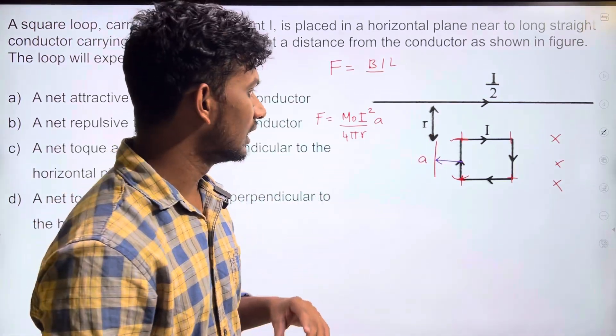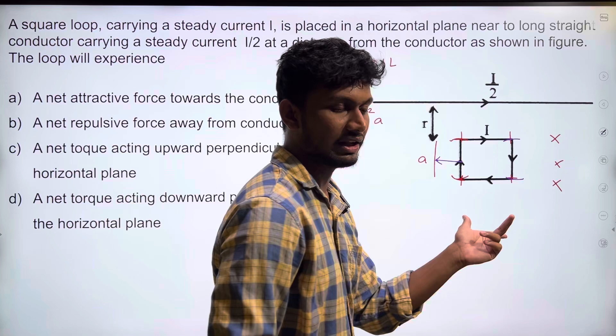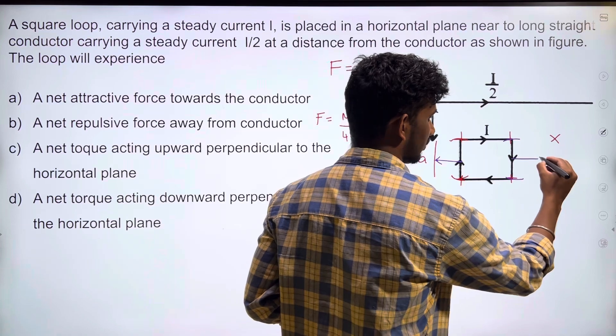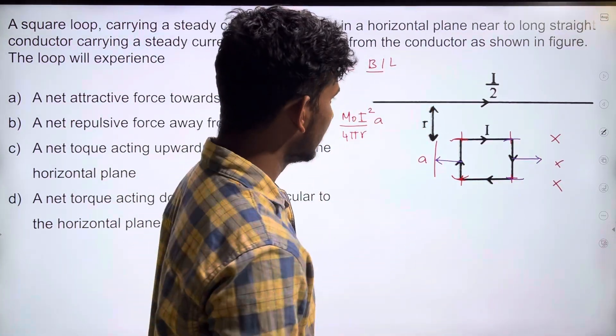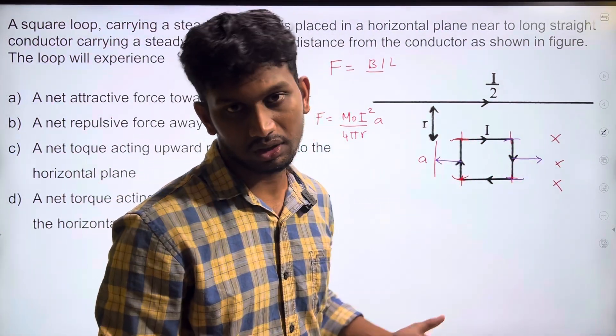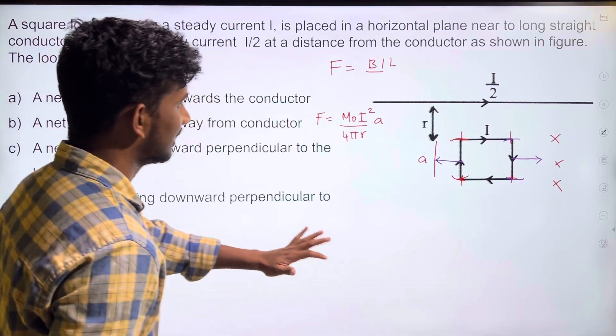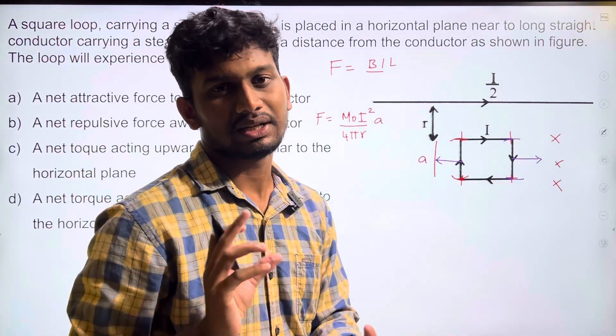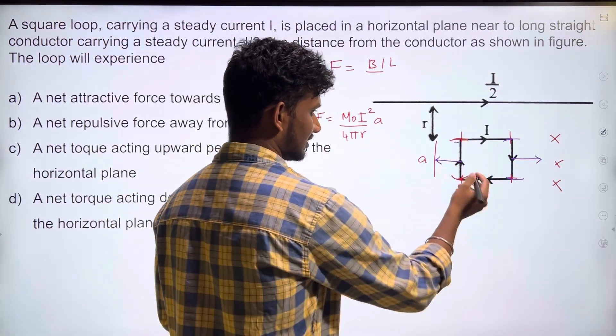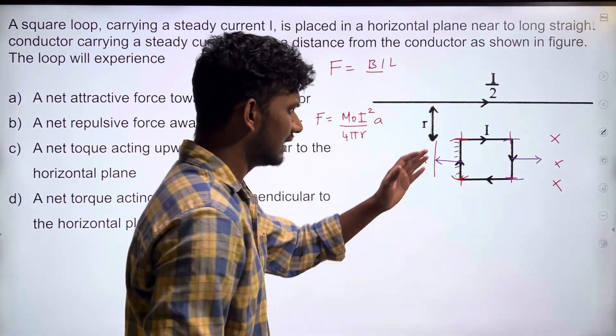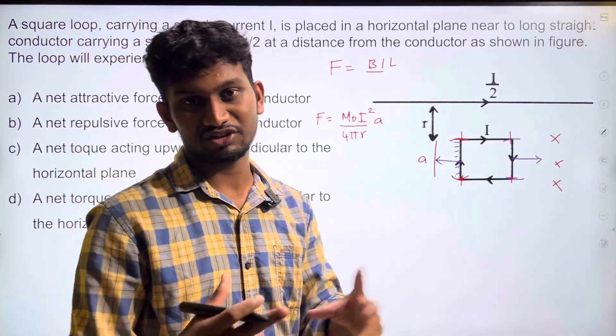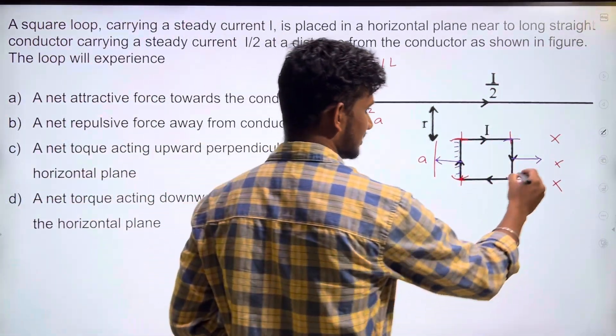For the third conductor and fourth conductor, these forces are equal and opposite, so they cancel out. But for the other two conductors, even though forces appear in opposite directions, the moment of forces will be in the same direction, so they also cancel out.